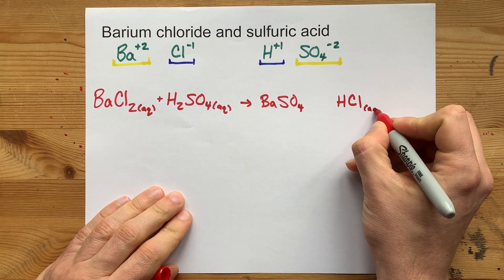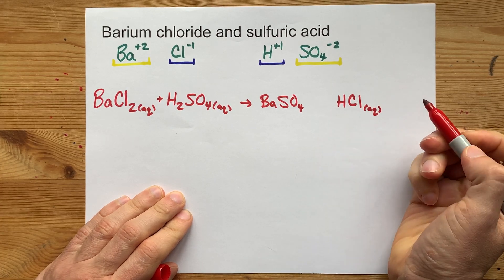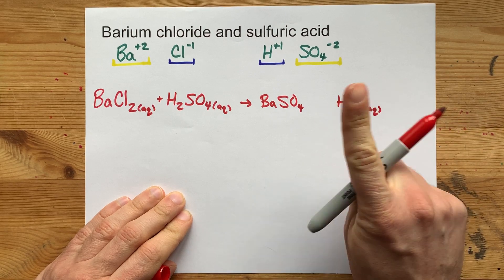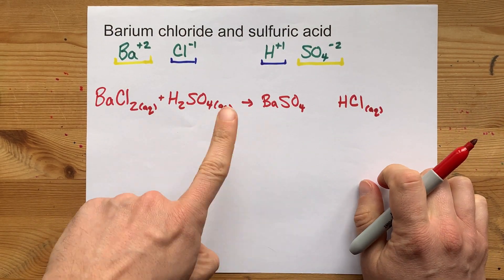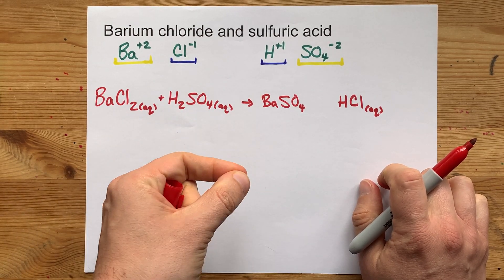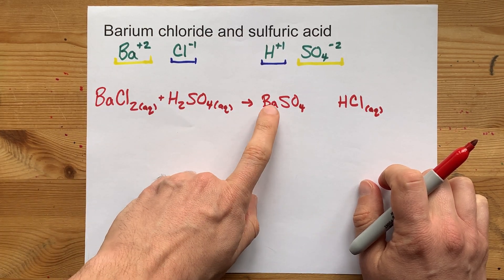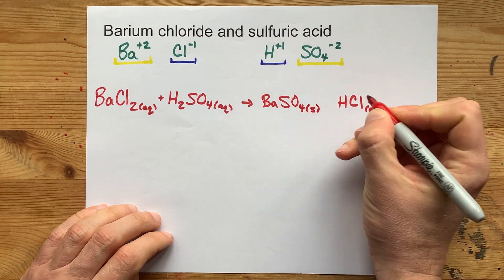Now, hydrochloric acid dissolves in water. Almost all nonmetal acids do. Barium sulfate, on the other hand, those two ions cannot coexist in aqueous solution. Check any set of solubility rules or solubility tables. You will find that lots of sulfates are soluble, but barium is not one of them. And so, that gives you a solid.